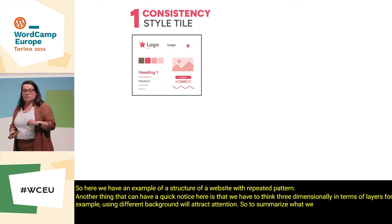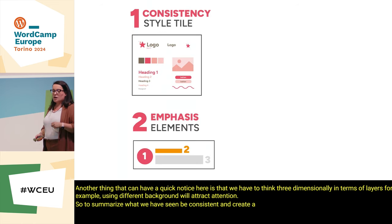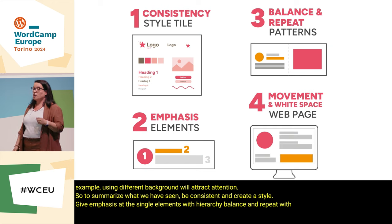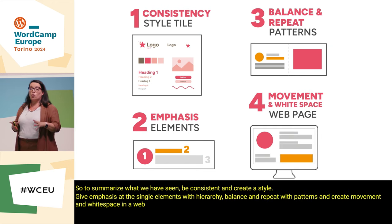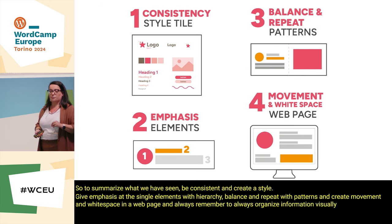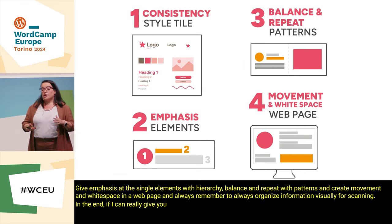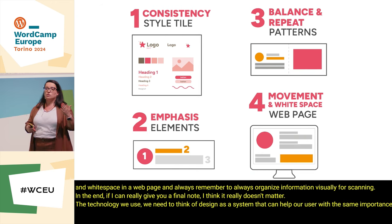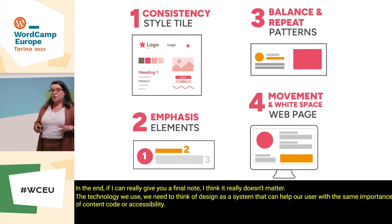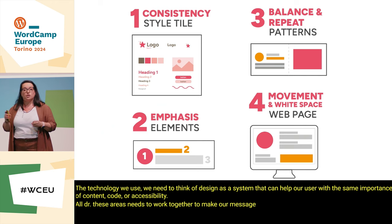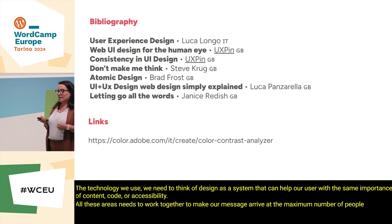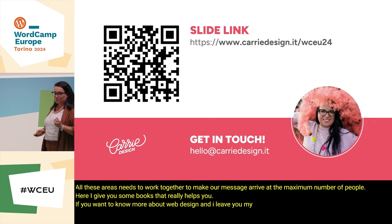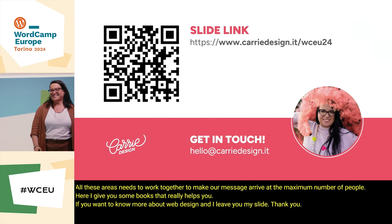So to summarize what we have seen: be consistent and create a style tile; give emphasis to single elements with hierarchy; balance and repeat with patterns; and create movement and white space in a web page. Always organize information visually for scanning. As a final note, I think it really doesn't matter what technology we use — we need to think of design as a system that can help our user, with the same importance as content, code, or accessibility. All these areas need to work together to make our message reach the maximum number of people. Here are some books that can really help if you want to know more about web design. Thank you.